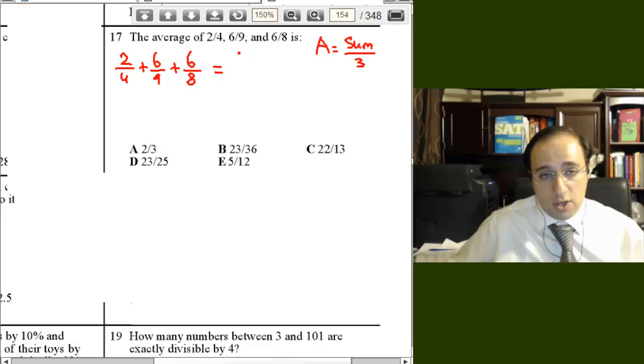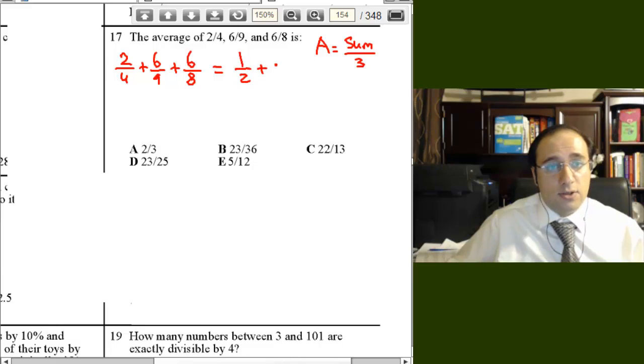So 2 over 4 is half, 6 over 9 divided by 3 will be 2 over 3, 6 over 8, if you divide by 2, 6 becomes 3, and 8 becomes 4.